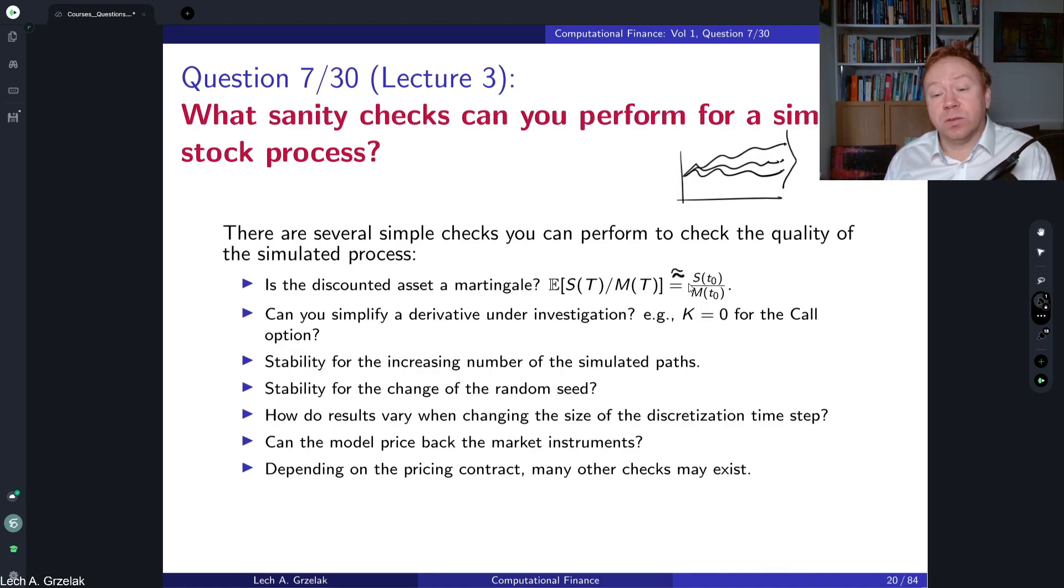On the other hand, this difference between the left-hand side and right-hand side you may use also to correct your Monte Carlo paths such that this equality will be always ensured. This kind of drift correction you can call it, or martingale correction term.